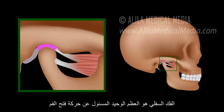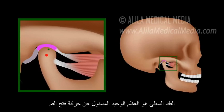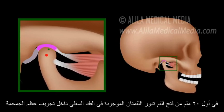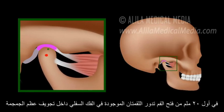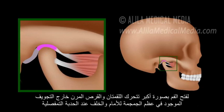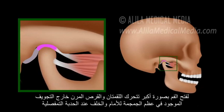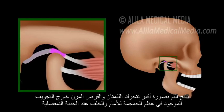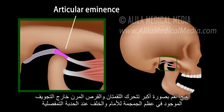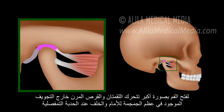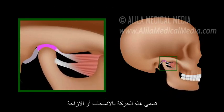The mandible is the only bone that moves when the mouth opens. The first 20 mm of opening involves only a rotational movement of the condyle within the socket. For the mouth to open wider, the condyle and the disc have to move out of the socket, forward and down the articular eminence, a convex bone surface located anteriorly to the socket. This movement is called translation.